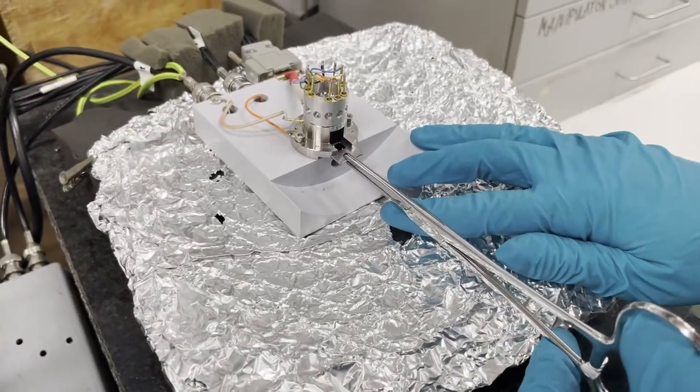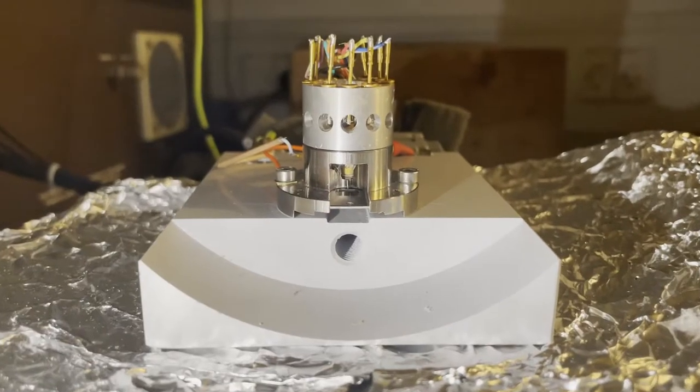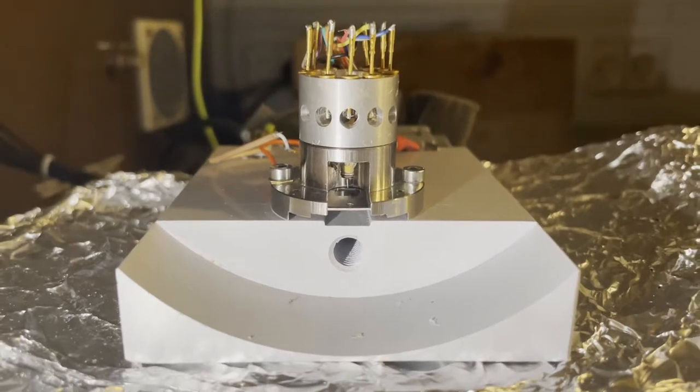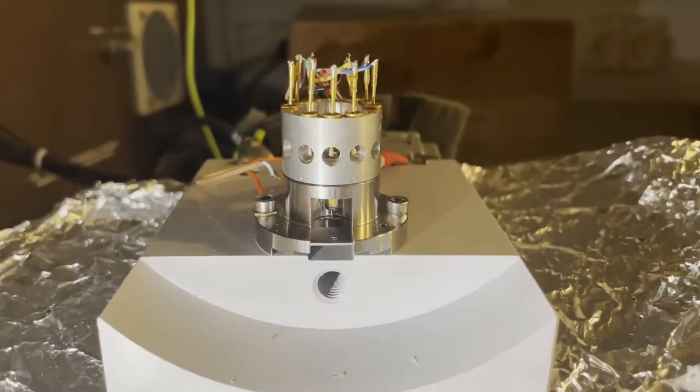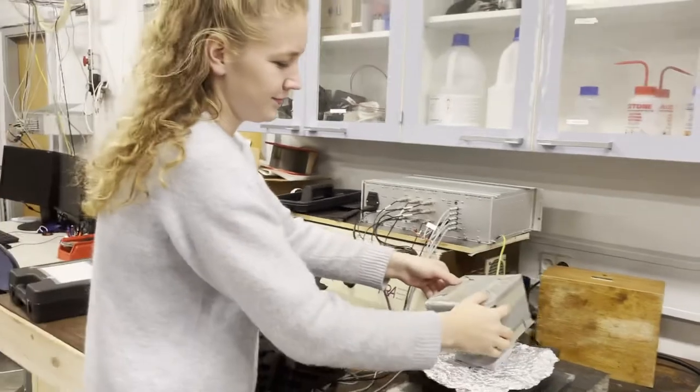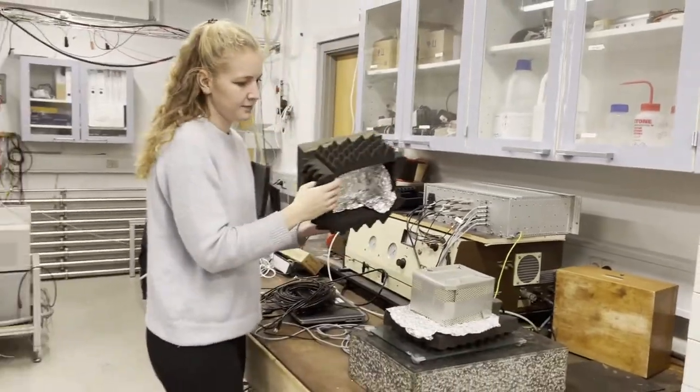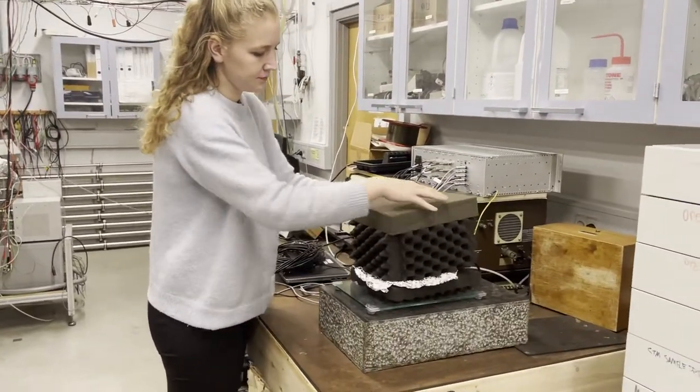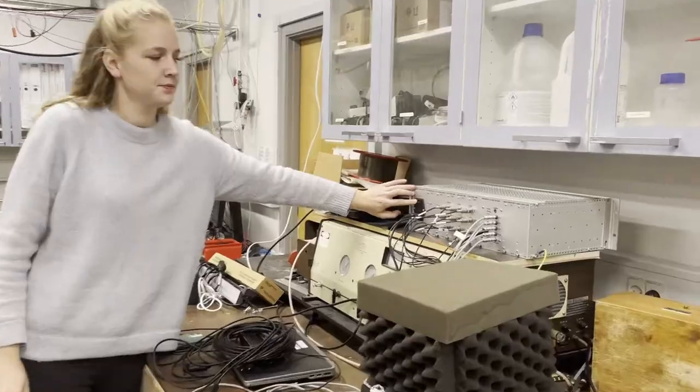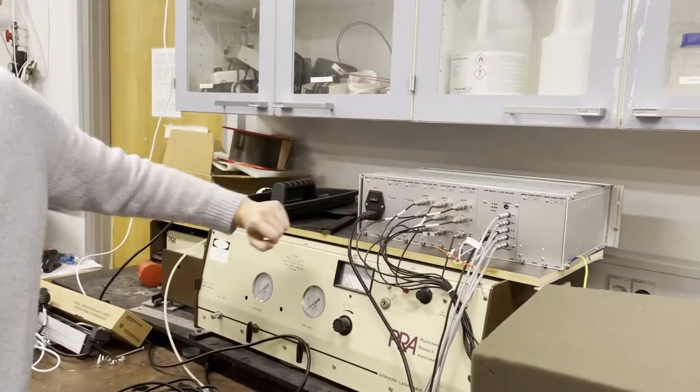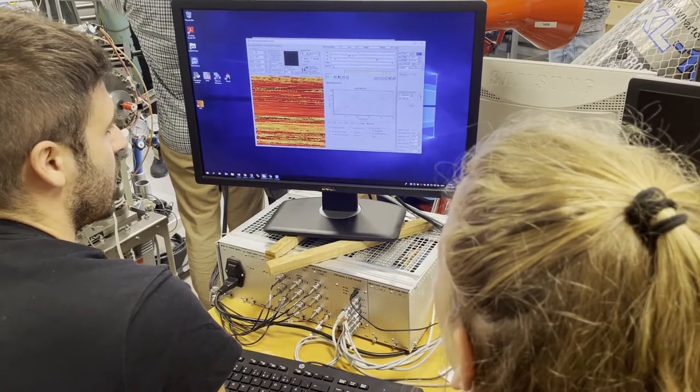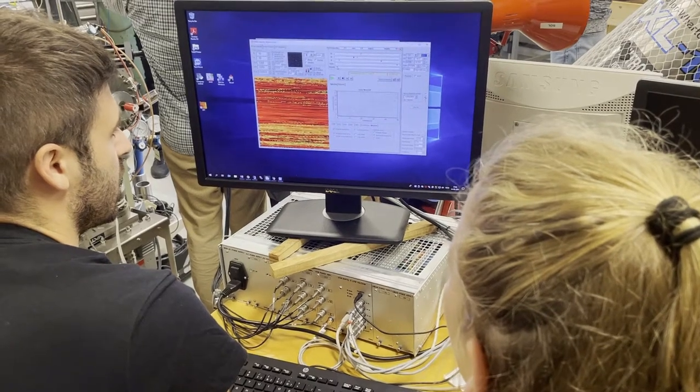We put the sample back in, and now you can see the tip close to the graphite. To protect our scanning tunneling microscope from any external noise, we surround it by foam. Then we can turn on the scanning tunneling microscope and we can approach the tip to the surface from the computer. Then we're ready to scan.